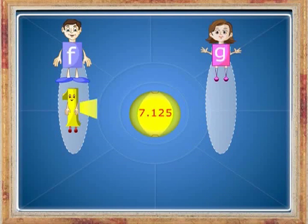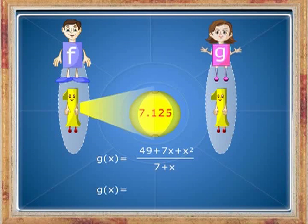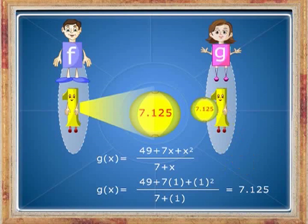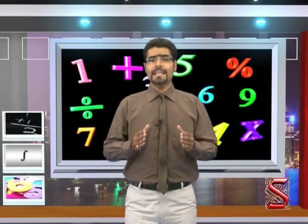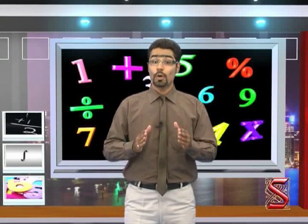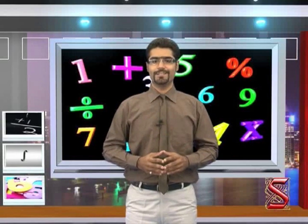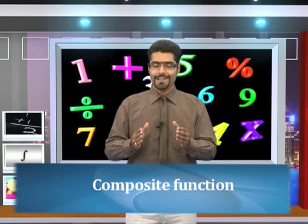Then f of 1 equals 7.125. We can see that the image of all the elements is the same under f and g, so they are equal functions. Now let us move to composite functions and understand them.